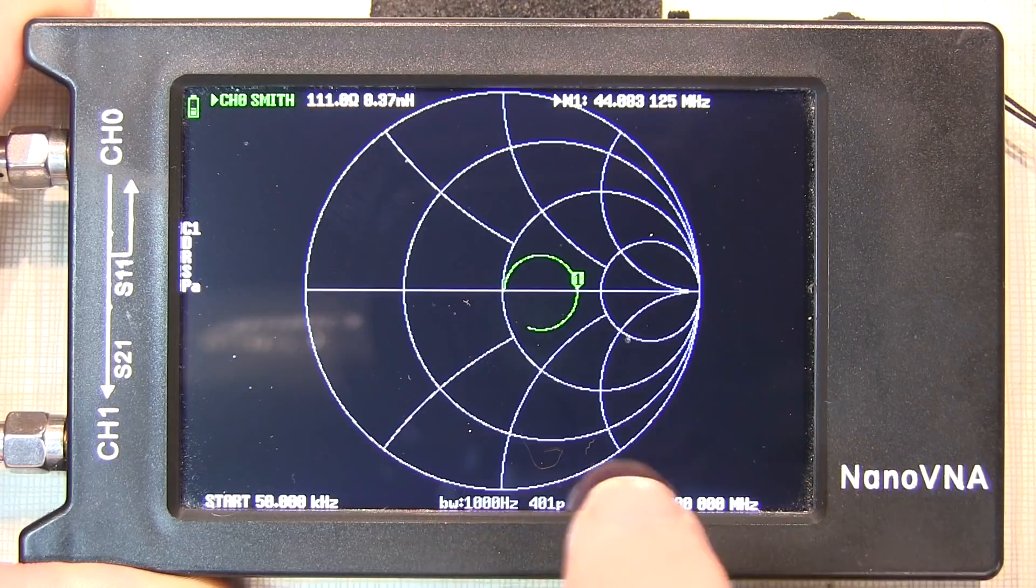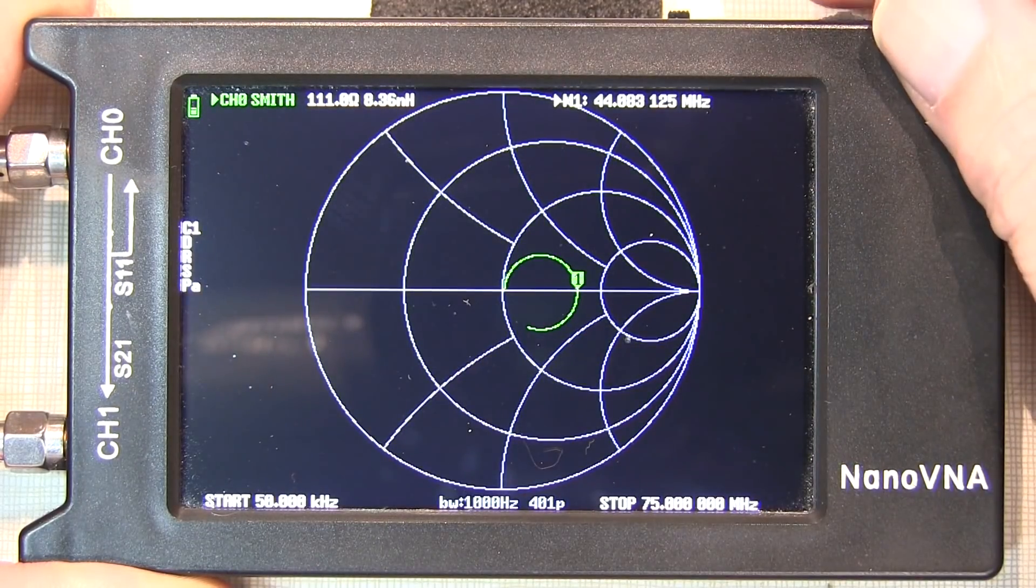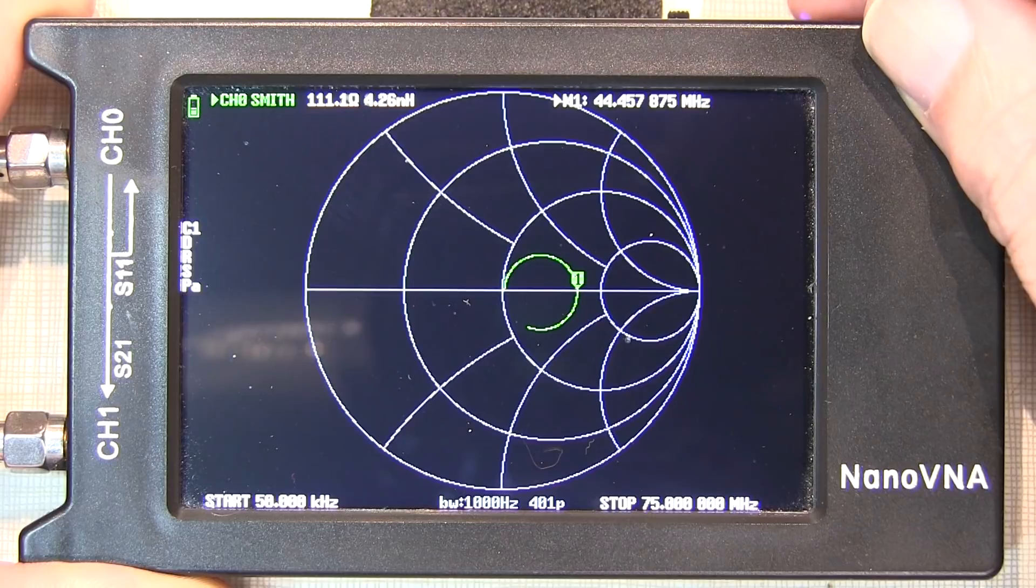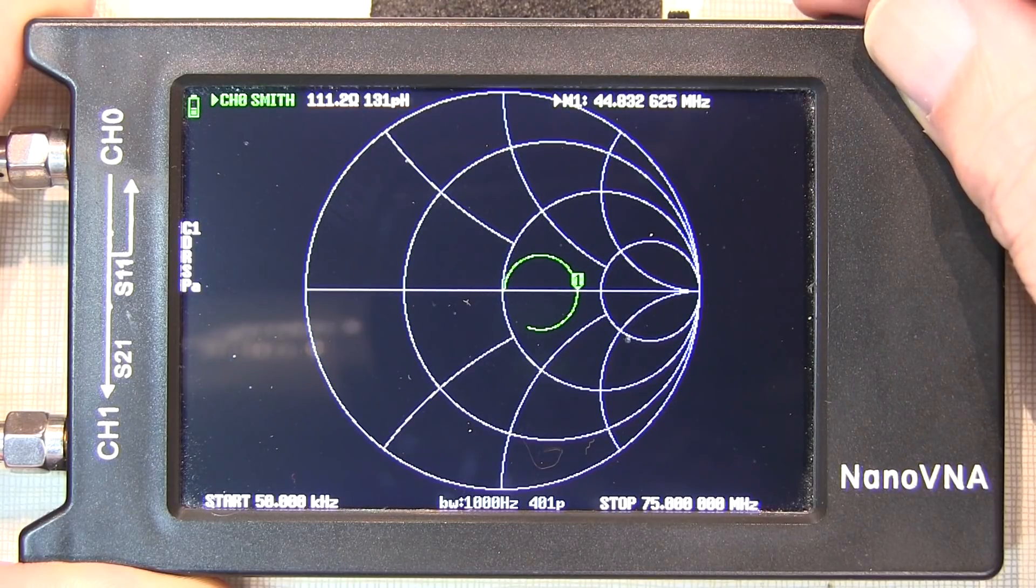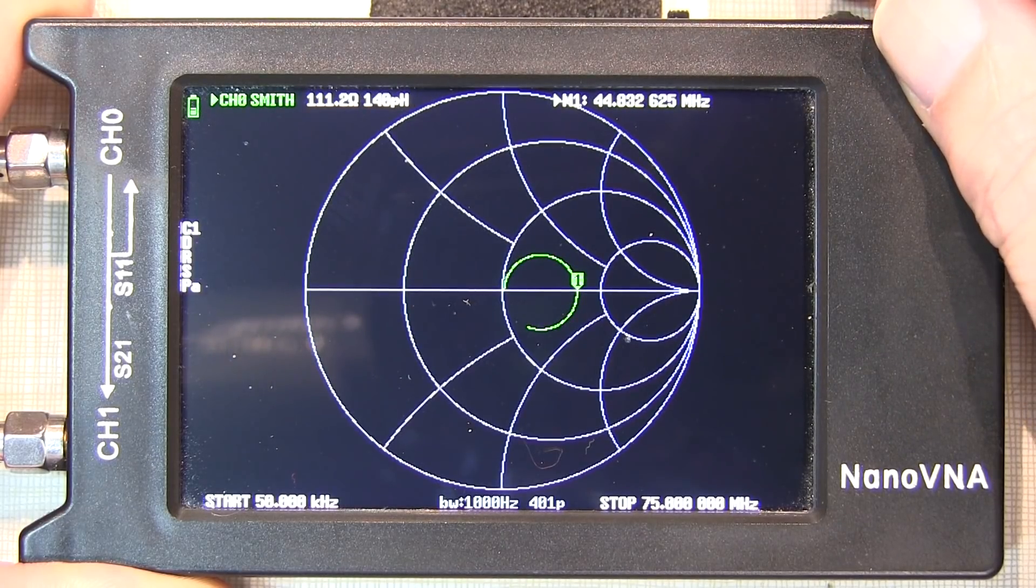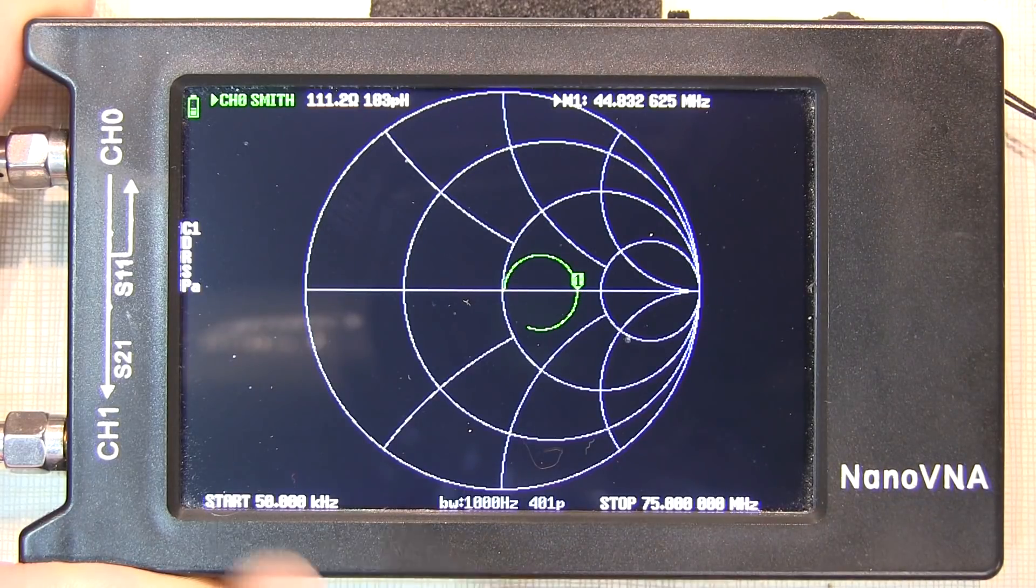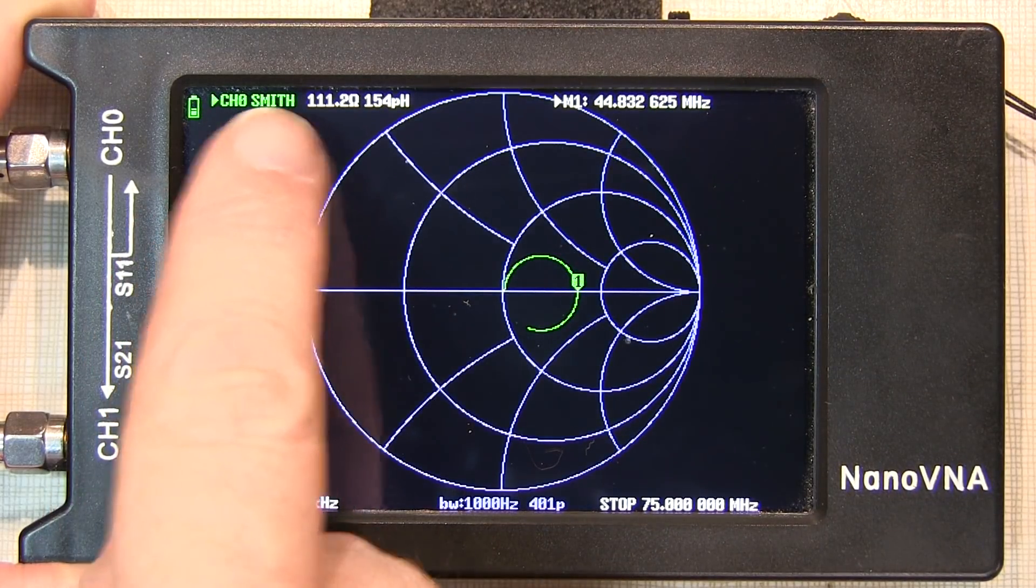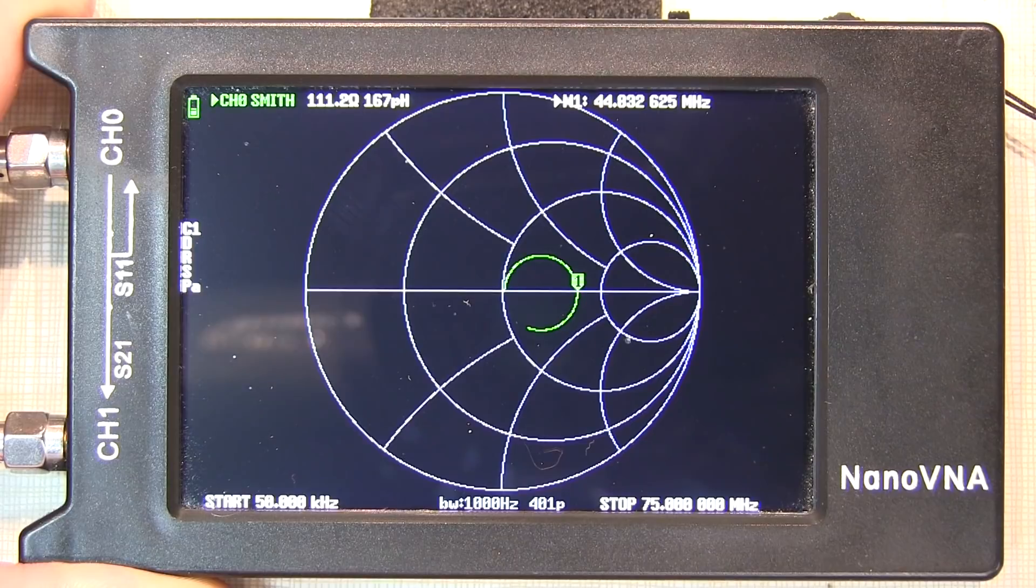And as the frequency goes up, we start changing the impedance looking into the coax. And just when we cross the prime axis, when we go from inductive to capacitive, which is right there, we can actually read the resistive component of 111 ohms.